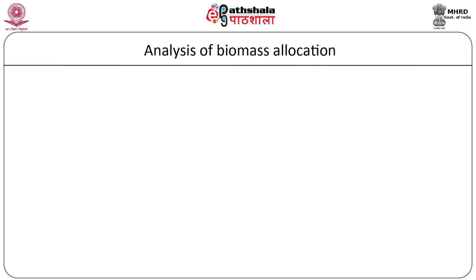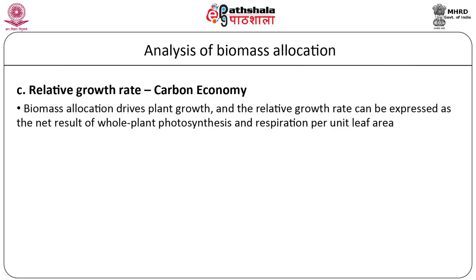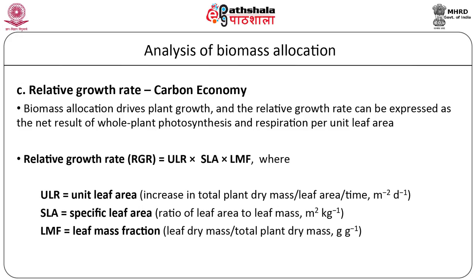Biomass allocation is considered to be a strong driver of the capacity of plants to acquire and respire carbon through photosynthesis and respiration respectively, and plays an important role in the growth of plants. Biomass allocation can therefore be analyzed in terms of relative growth rate. Since photosynthesis takes place only in the leaves, the carbon economy of the whole plant can be expressed as a net result of whole plant photosynthesis and respiration per unit leaf area. The relative growth rate can be expressed as a product of unit leaf rate (ULR), which is a measure of the increase in total plant dry mass per leaf area per time, and the specific leaf area (SLA), which is a ratio of leaf area to leaf mass, and the leaf mass fraction (LMF), which is the fraction of total biomass allocated to the leaves.